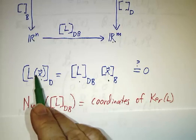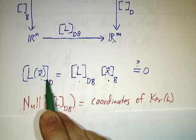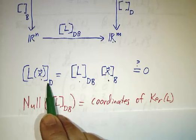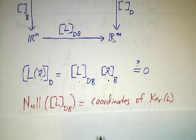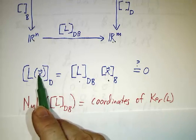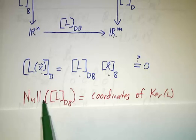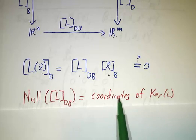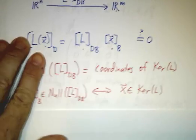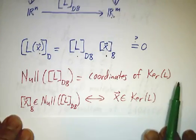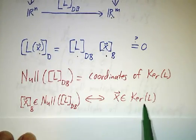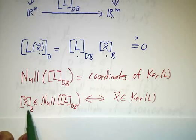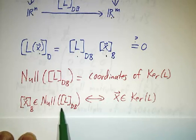But if it's zero, then that means that coordinates of L are zero, which means that L has to be zero. So that means that x had to be in the kernel. So the null space of the matrix are the coordinates of the kernel. To put it another way, a vector x is in the kernel if and only if the coordinates of x are in the null space.